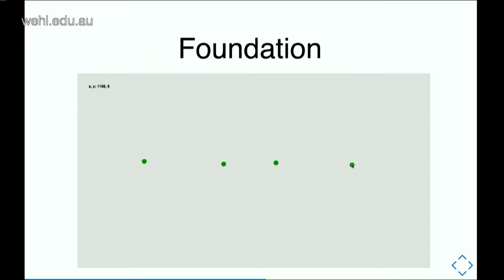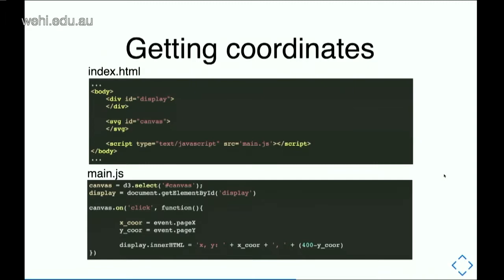I wrote this in JavaScript and HTML. HTML is just a way of telling the browser which components are on the page and giving little containers for each. I've got two containers: one starts with 'div' — that's my display of numbers — and the second one is called an SVG, which is the canvas of my data points. In my JavaScript file, which gets loaded when I open the web page, all I do is get a reference to that canvas — the SVG canvas — and also get a reference to that display. Now I can work with these references.